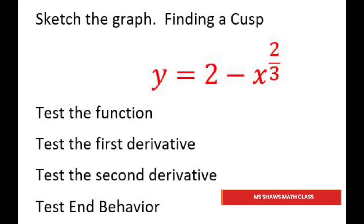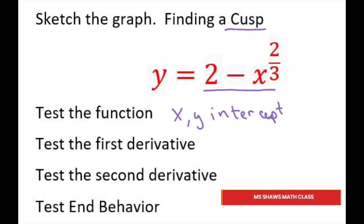Hi everyone. We're going to sketch the graph of y equals 2 minus x to the 2 thirds. Anytime it looks like this, it's probably going to be a cusp type graph. We're first going to test the function, which means finding x and y intercepts, taking the first derivative, second derivative, and testing end behavior.